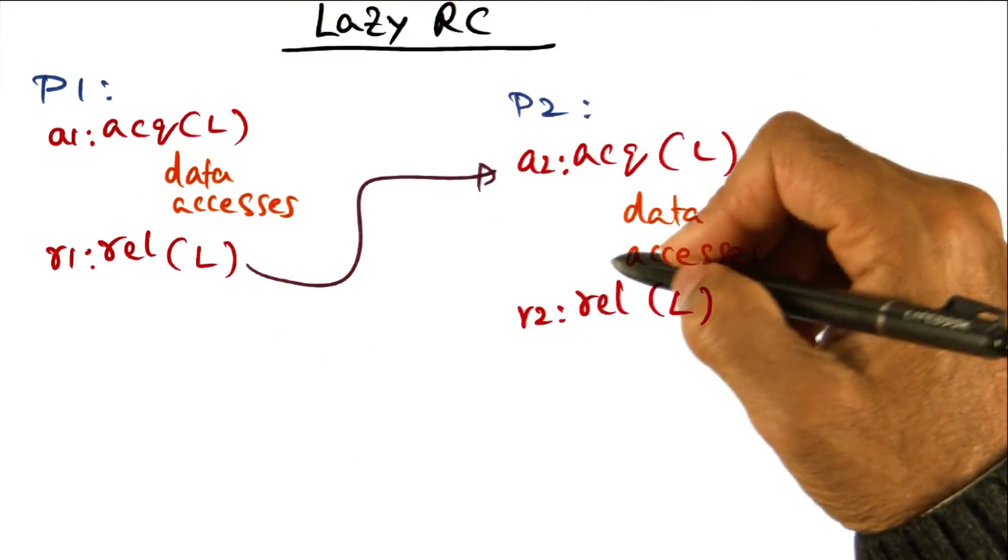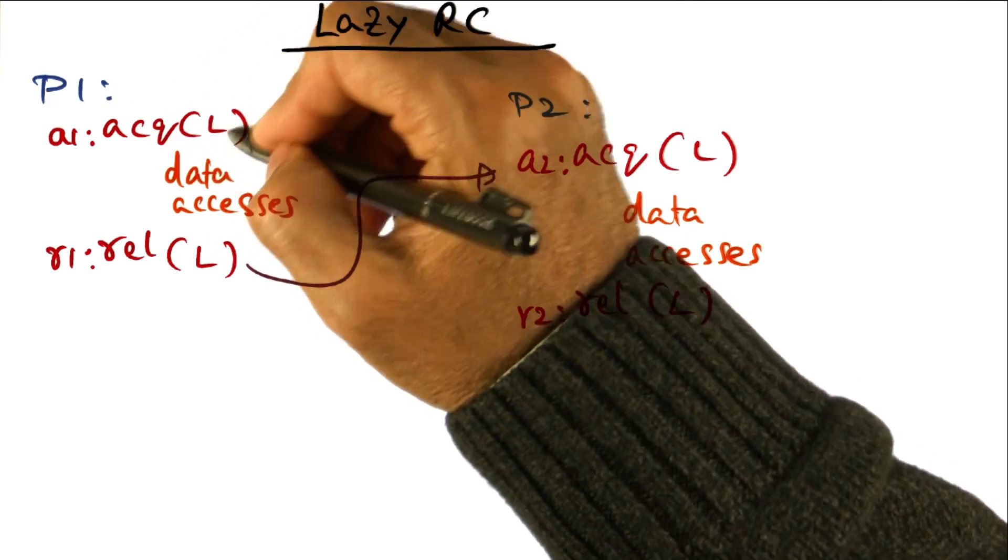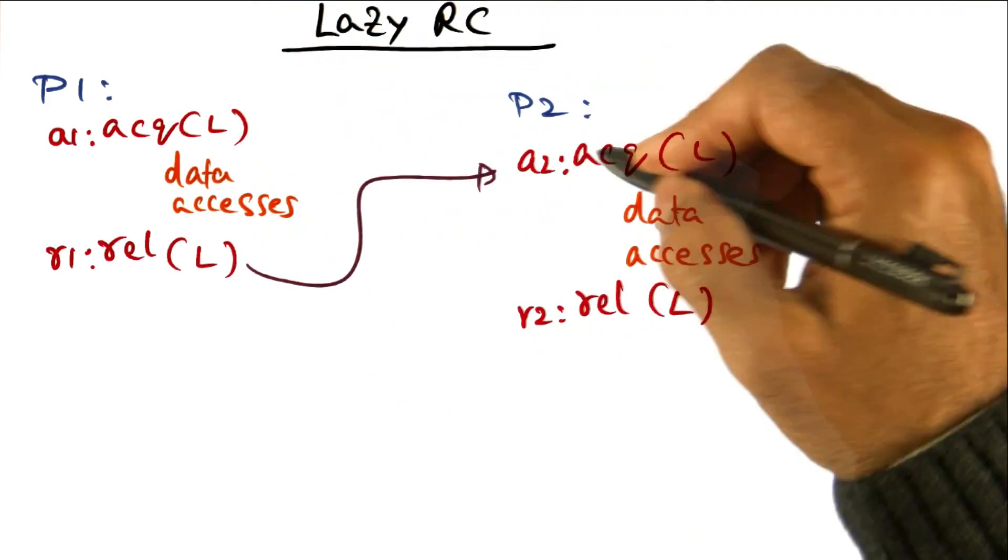This is the structure of your parallel program. A thread acquires a lock, does the data accesses, releases the lock.